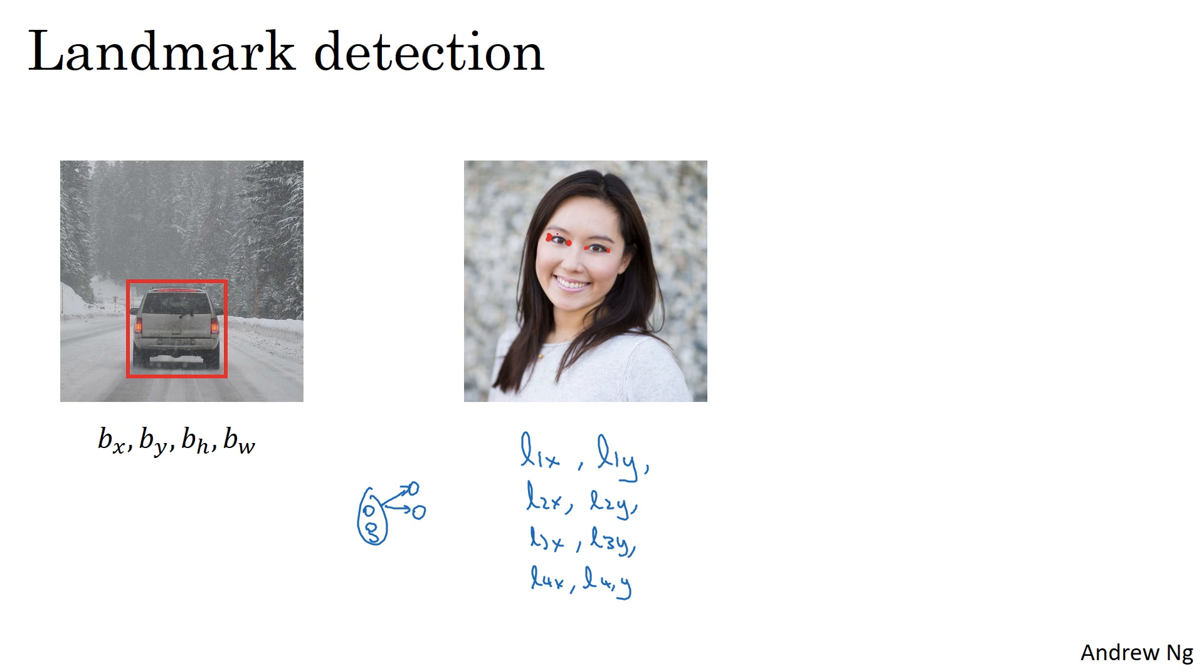But what if you don't want just those four points? What if you want to output key points along the eye, maybe output some key points along the mouth so you can extract the mouth shape and tell if the person is smiling or frowning, maybe extract a few key points along the edges of the nose? You could define some number—for the sake of argument, let's say 64 points or 64 landmarks on the face, maybe even some points that help you define the edge of the face and the jawline. By selecting a number of landmarks and generating a labeled training set that contains all of these landmarks, you can then have the neural network tell you where are all the key positions or the key landmarks on a face.